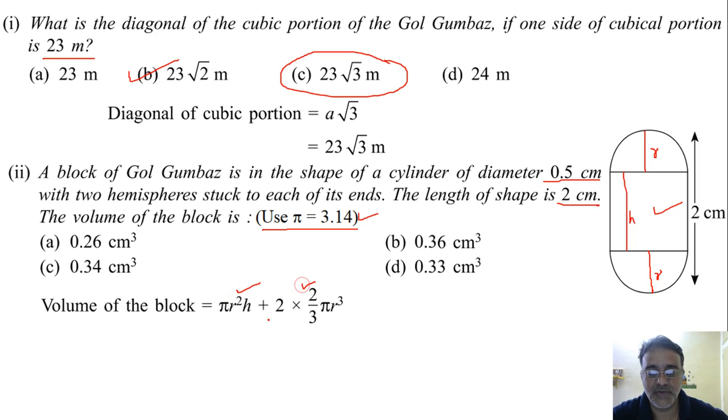Pi r square common lehenge. Toh yahan pe bachega h. Aur yahan kya bachega? 4 r by 3. Okay. Fine. So we will get 4 upon 3 r. Now the value of pi is given 3.14. And what is the value of r here? 0.5 by 2. Okay. So 0.25. And what is the value of h? We got 1.5. 1.5. Very good. So we will substitute all the values. The substitution is clear? Yes sir.